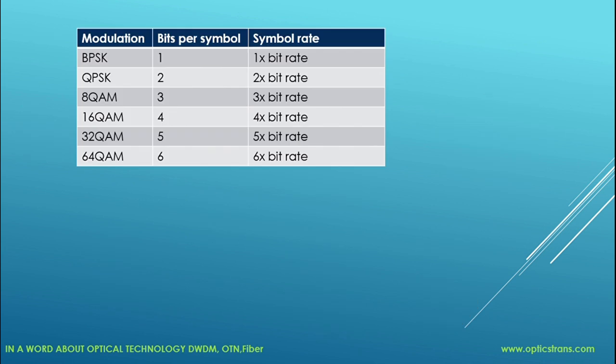This is the list of all modulations with bits per symbol. We have BPSK with 1 bit per symbol, QPSK with 2, 8-QAM with 3, 16-QAM with 4, 32-QAM with 5, and 64-QAM with 6 bits per symbol.